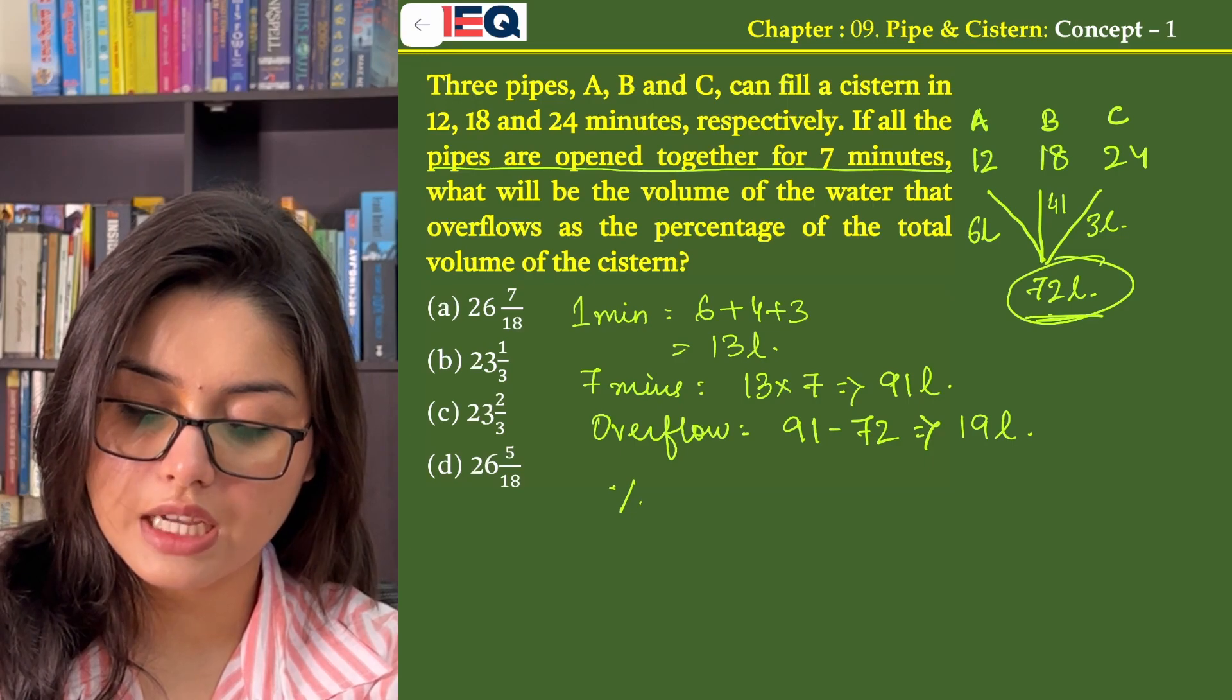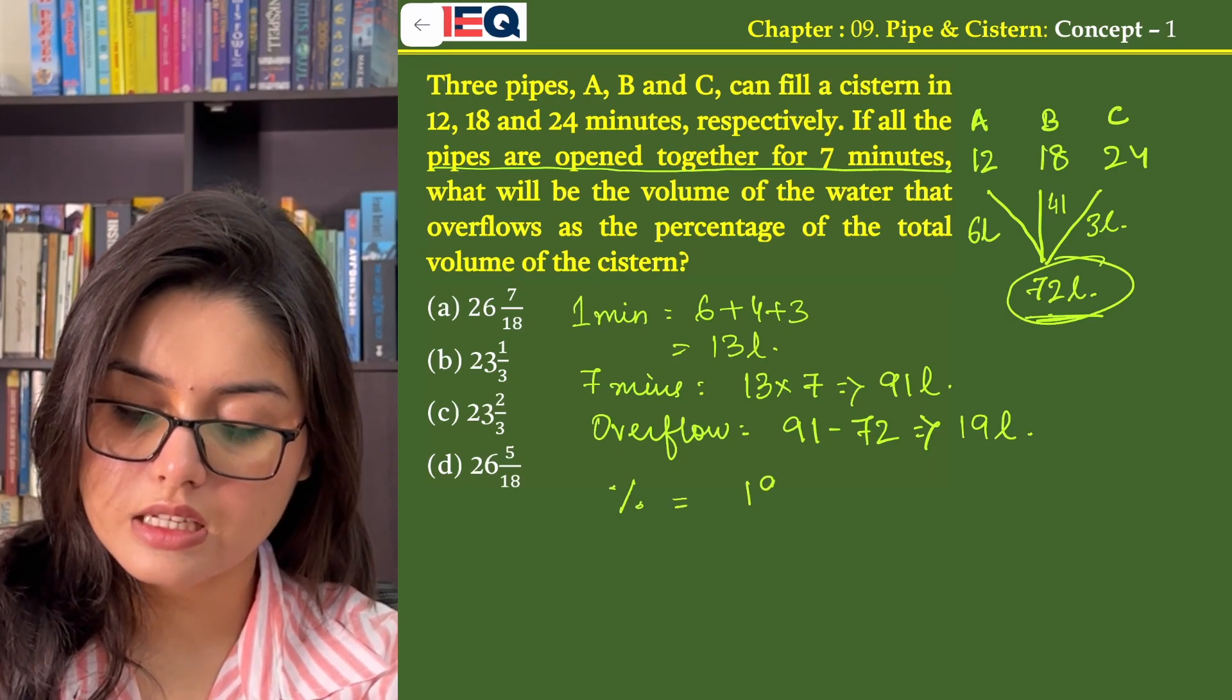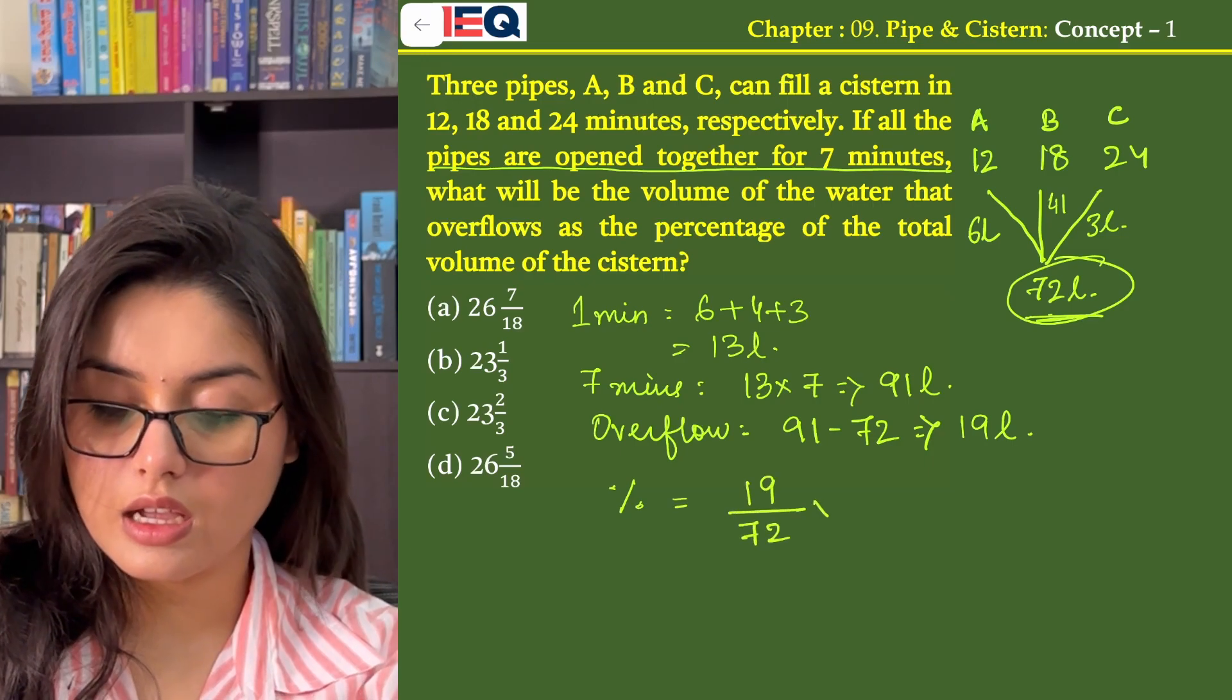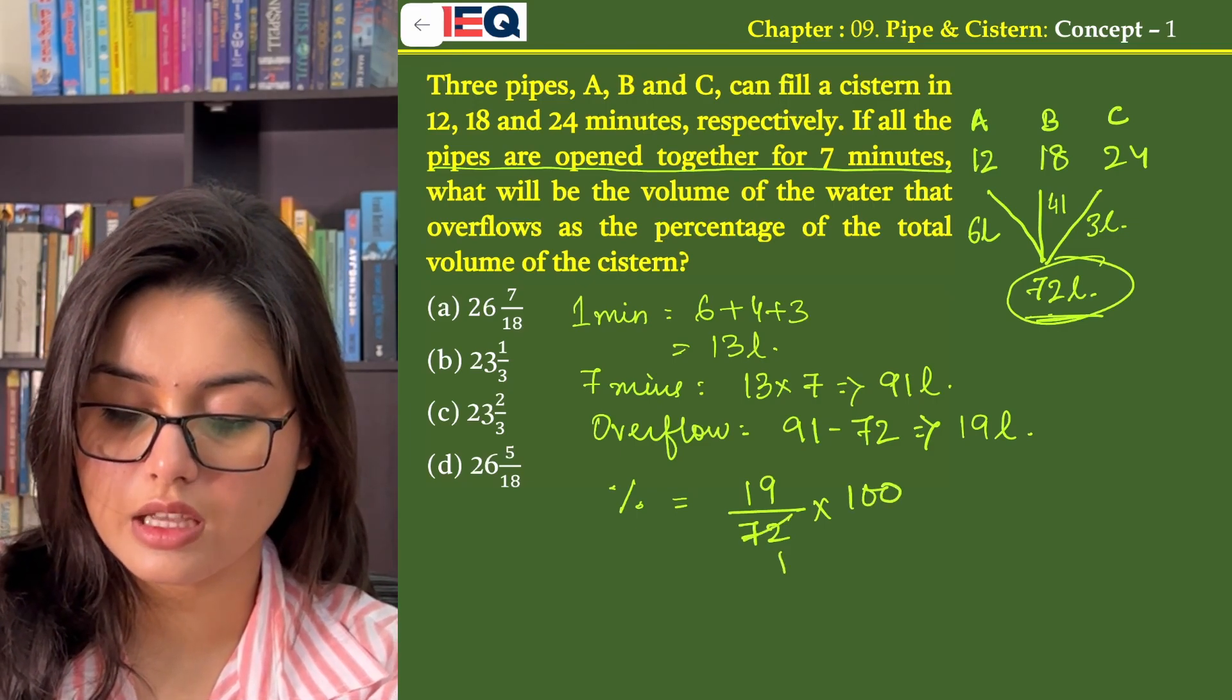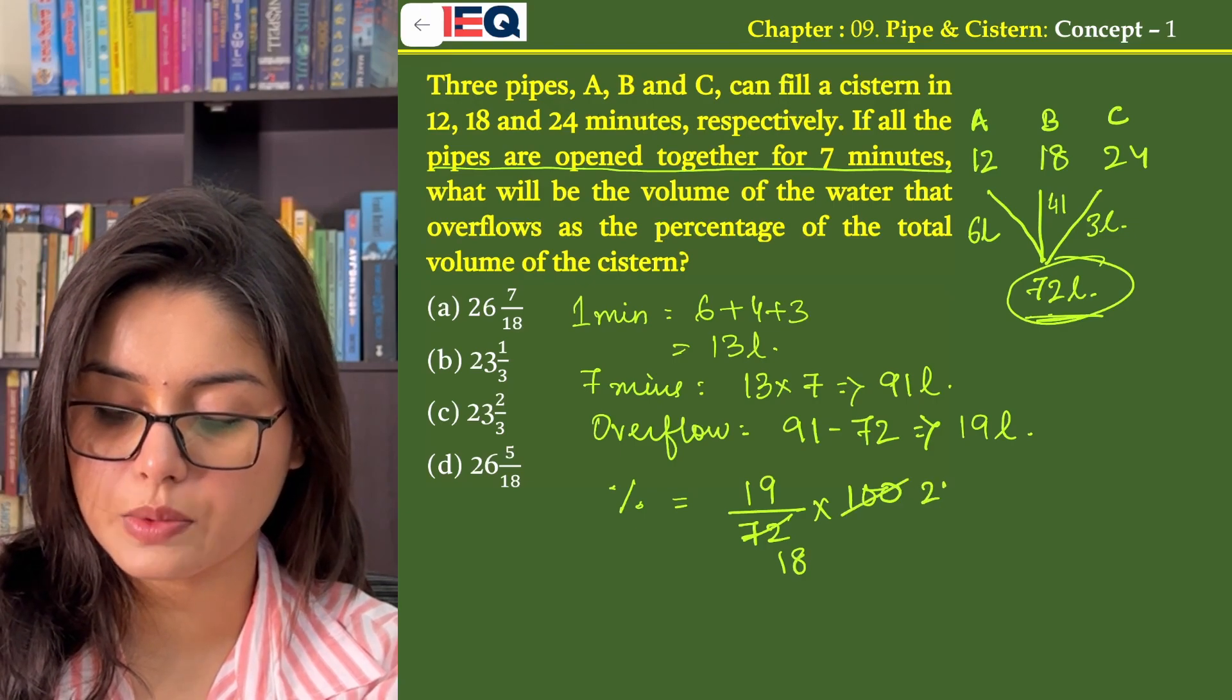Now, in percentage if we find, we will get 19 by 72 into 100. Now, on dividing 72 and 100 by 4, we get 18 and 25.